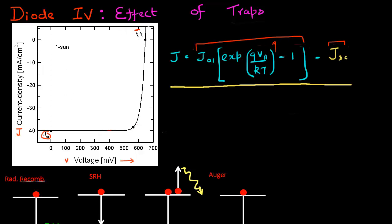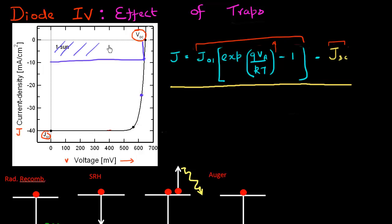JSC and VOC are important parameters to keep in mind for any solar cell. Another important parameter is the maximum power. We can operate this solar cell at any of these voltages, and the amount of power we would extract at each of these points is essentially represented by the area under this curve.